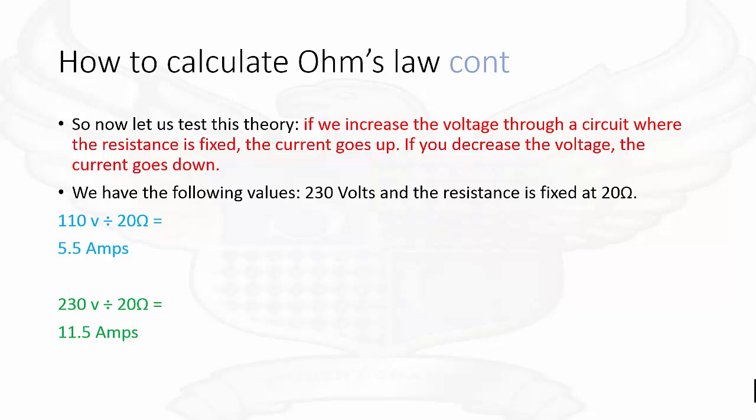Going back to our theory, if we increase the voltage through a circuit... In our first example, we had 110 volts. The resistance was fixed at 20 ohms. Now we will have 230 volts. We have increased the voltage through a circuit. 20 ohms is still our resistance and our current goes up. At 110 volts, when stepping down from 230 volts, our current goes down. And if we increase from 110 volts to 230 volts, our current goes up.